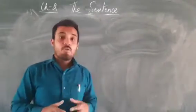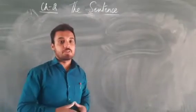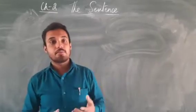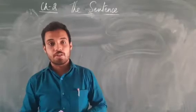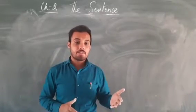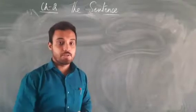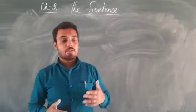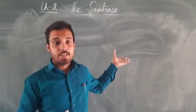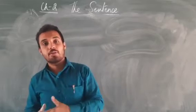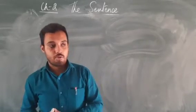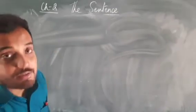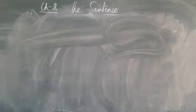Now what are the different types of sentence? There are four different types of sentence: declarative or assertive — these are counted together — then we have interrogative sentence, imperative sentence, and exclamatory sentence. We are going to discuss all these types. While talking about a sentence, always remember it is a group of words which makes a complete sense. Now we are going to see the different types, starting with declarative or assertive.